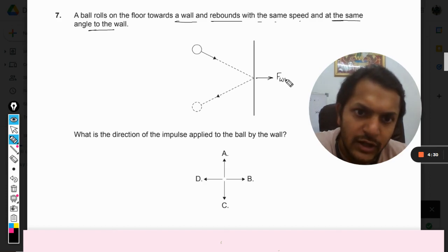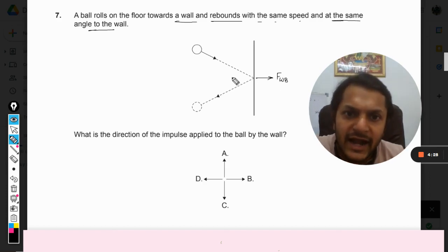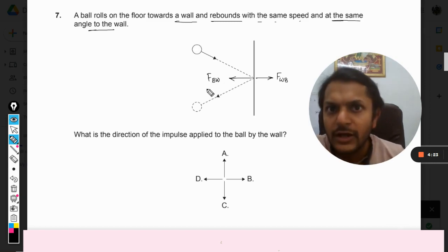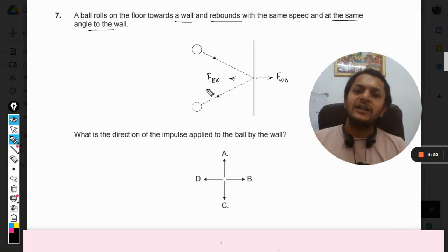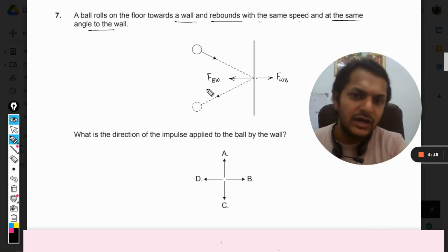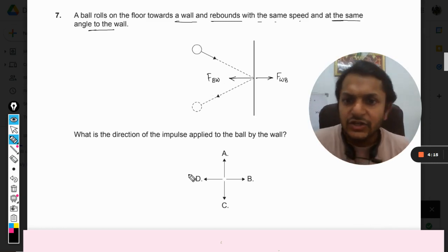and there will be a counter force, equal and opposite, which is the force on the ball by the wall. So obviously that direction will be towards the left. As far as options are concerned, I can say that yes, D will be the answer to this question.